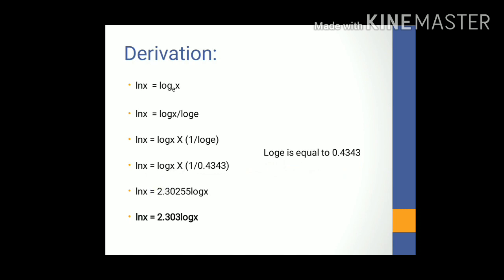Log of x times 1 divided by 0.4343. Then 1 divided by 0.4343, when you do this in your calculator, you will get 2.30255.